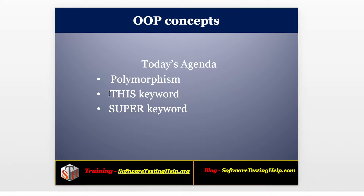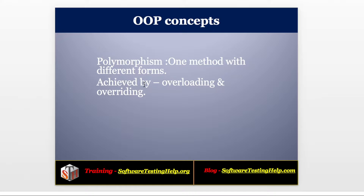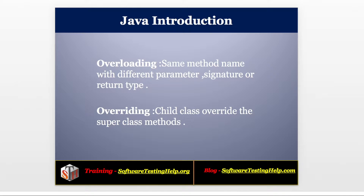Welcome to the tutorial. In this tutorial we will see about polymorphism, the 'this' keyword, and the 'super' keyword. First we will see about polymorphism. Polymorphism is a Greek word meaning 'different forms.' In OOP, one method can take different forms. Polymorphism can be achieved by overloading and overriding.